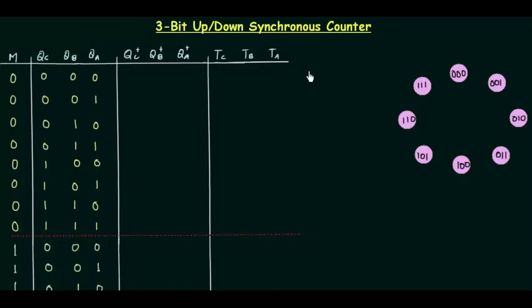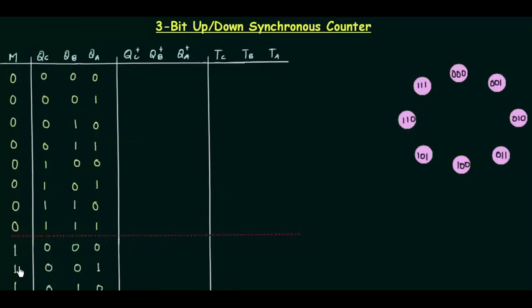If you are watching this presentation, I hope you have learned the basics of the counter. TC, TB, and TA are the inputs of the three flip-flops. QC, QB, and QA are the outputs of the three flip-flops and are the output of our 3-bit counter. We have a control input that we call M. When M is 0, we will have up counting, and when M is 1 or high, we will have down counting.